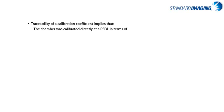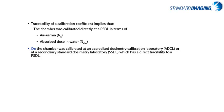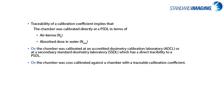To delve a little deeper into the intricacies of calibration coefficients, in order for a chamber to be traceable in terms of the typical air kerma or absorbed dose to water coefficients, the chamber must have been calibrated directly at a primary lab or at an ADCL or SSDL, or it can be cross-calibrated, which is calibrated against a chamber that has been calibrated at one of these labs.